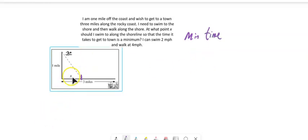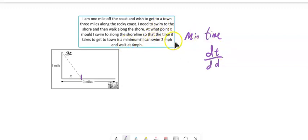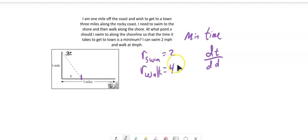And notice that we're questioning how far. So we want to think about how time is changing relative to distance. And we know a couple things. You can swim two miles per hour. So we have a rate for swimming. We have a rate for walking.